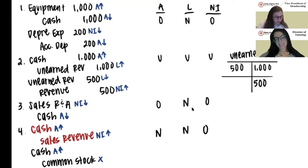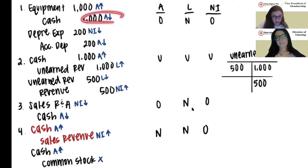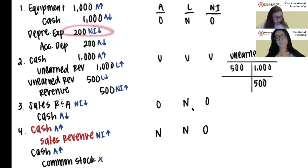We have a debit to equipment for $1,000 and a credit to cash for $1,000. A debit to equipment increases our assets and a credit to cash decreases our assets. For depreciation expense, a debit to expense lowers our net income, and a credit to accumulated depreciation lowers our assets.